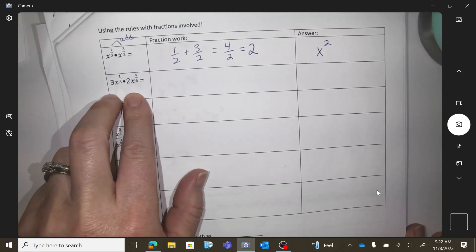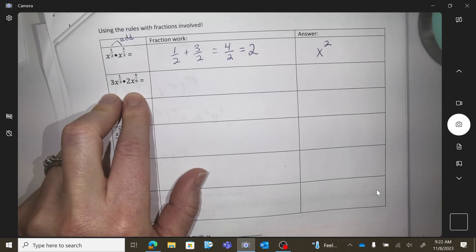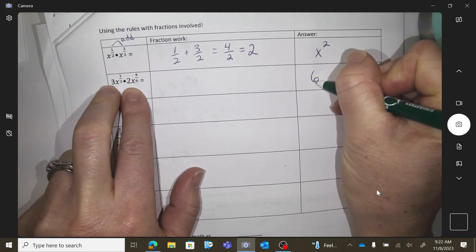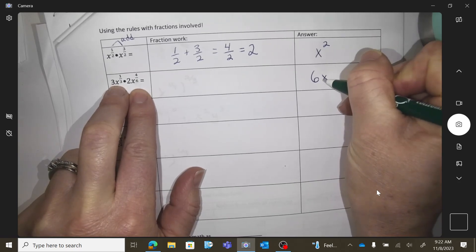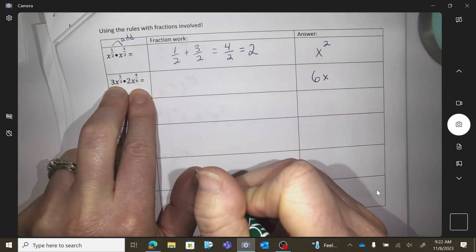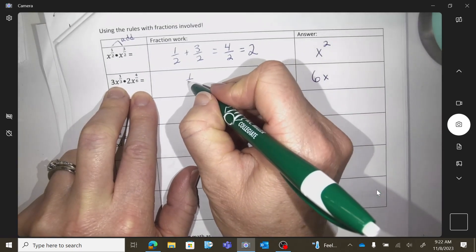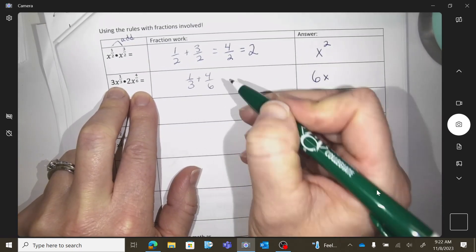The next one, there's coefficients. So you have to do the math with the coefficients, which would be 6. The base is x. And then the rules, what do I do with the rules? I need to add the exponents, right?